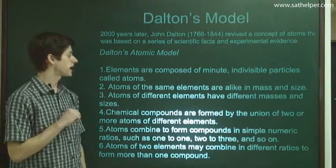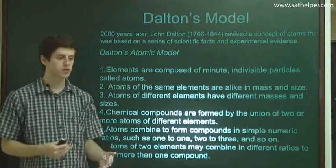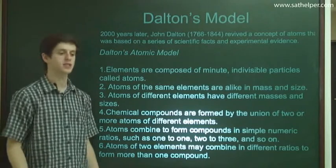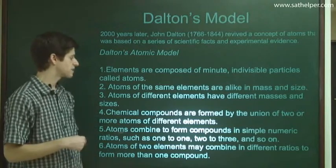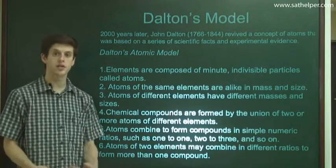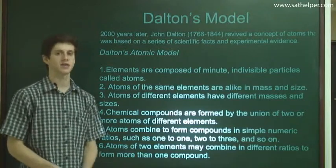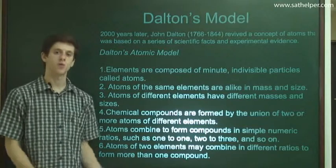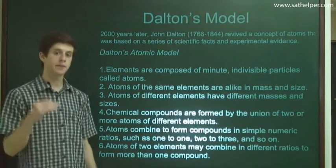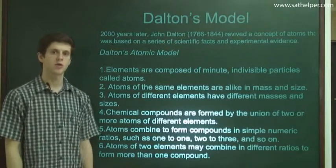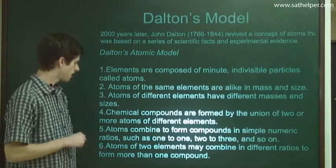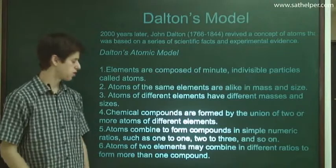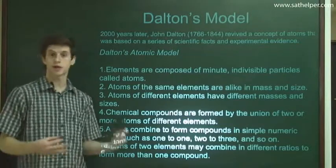Fourthly, chemical compounds are formed by the union of two or more different elements. When two or more different atoms come together, they make a compound with its own properties. And atoms combine to form compounds in simple numeric ratios — his fifth point — basically saying you're not going to see a compound that's 3.876 carbons and 5.137 hydrogens; they combine in simple whole number ways. Finally, atoms of two elements may combine in different ratios to form more than one compound.